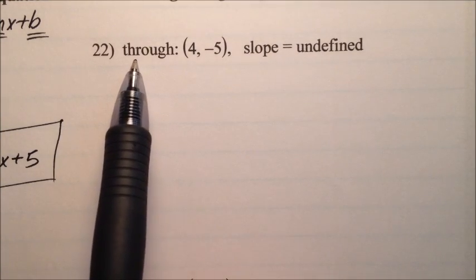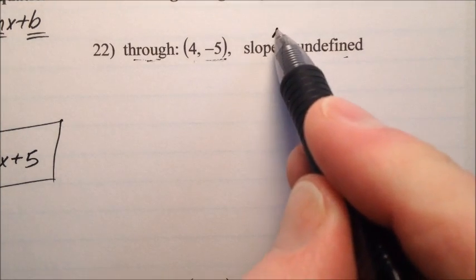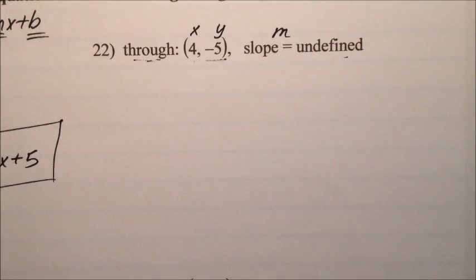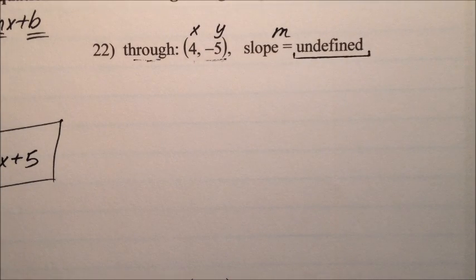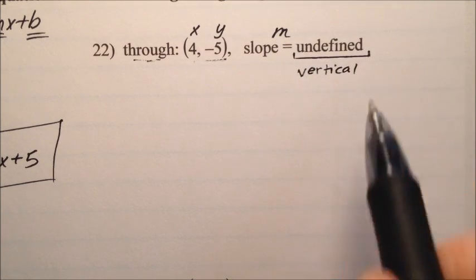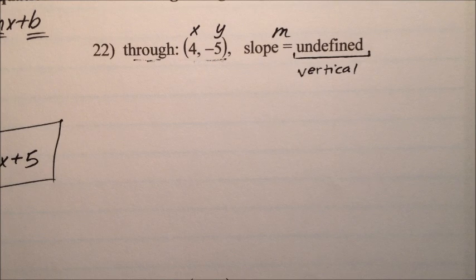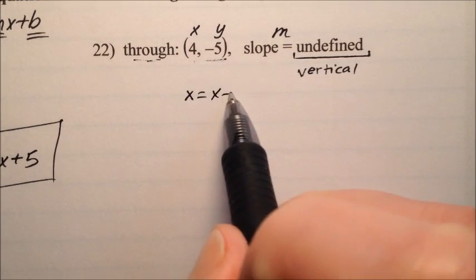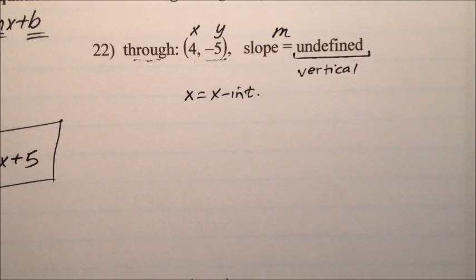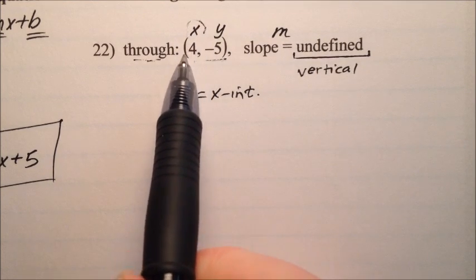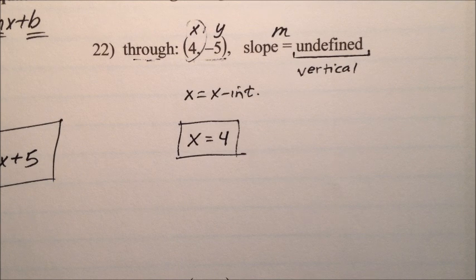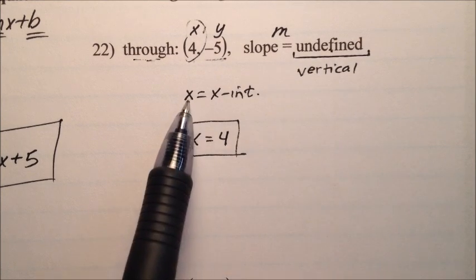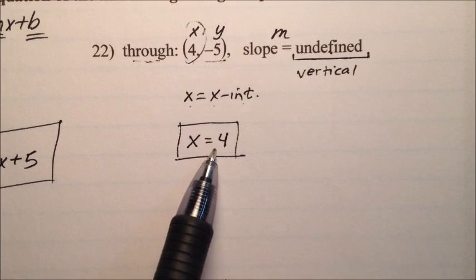In number 22, we're given a point and a slope. I notice immediately that the slope is undefined. Since the slope is undefined, that's going to be a vertical line. All vertical lines have equations of the form x equals the x value. So we grab the x from our point — x is 4 — and the equation is x equals 4. Number 22 is quick and easy: x equals 4.